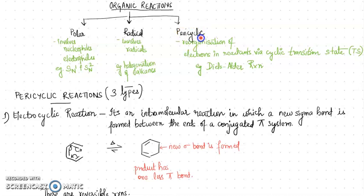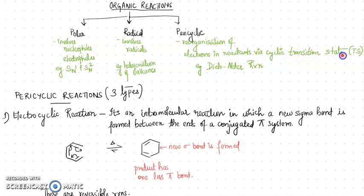Pericyclic reactions — a new term you might be hearing for the first time — do not involve any polar species and do not involve any radical species. Instead, they involve the reorganization of electrons in the reactants via a cyclic transition state. This particular point is very important: in pericyclic reactions you will be seeing the formation of a cyclic transition state.